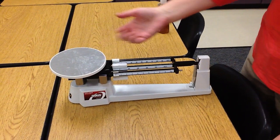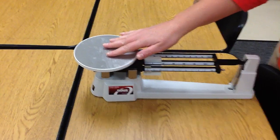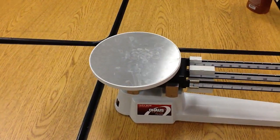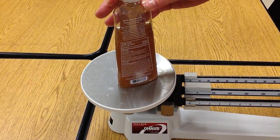So I'm going to go ahead and tell you about the parts of the triple beam balance. We have our pan. This is where you place your item to be measured to find the mass of the object on the pan.